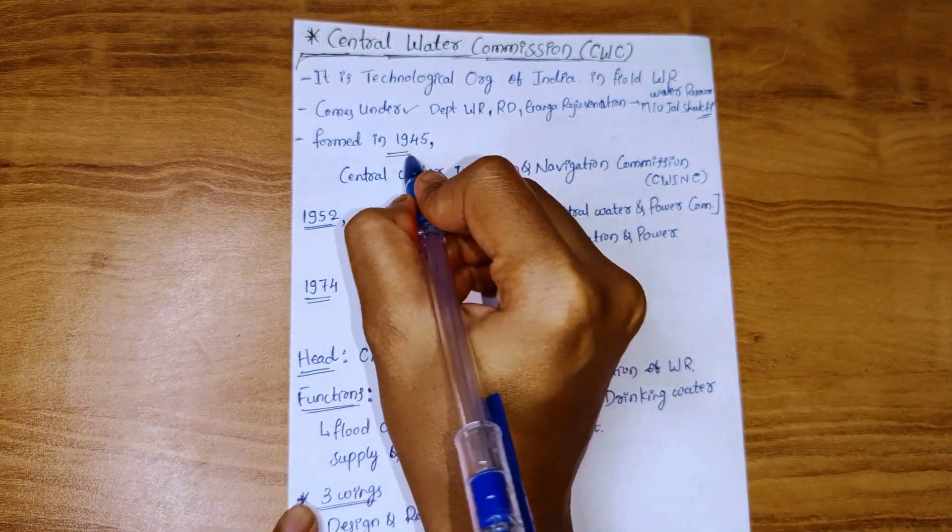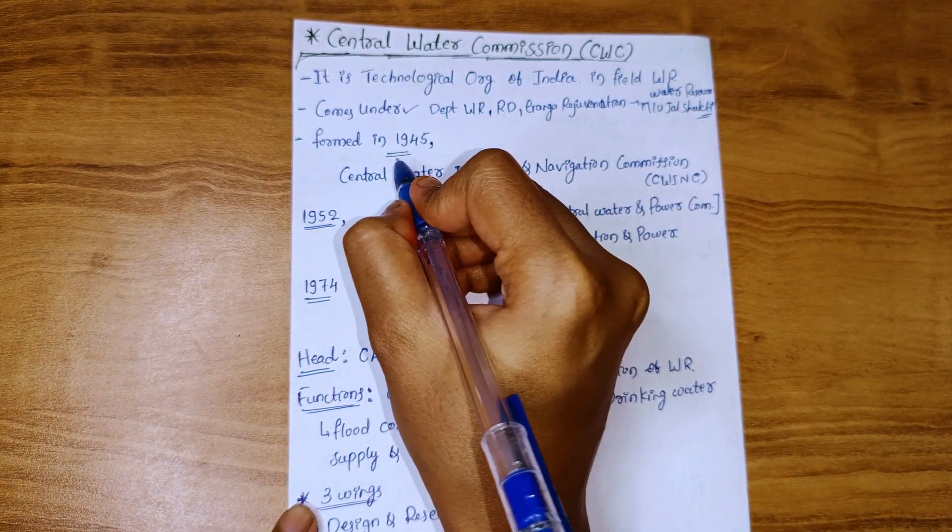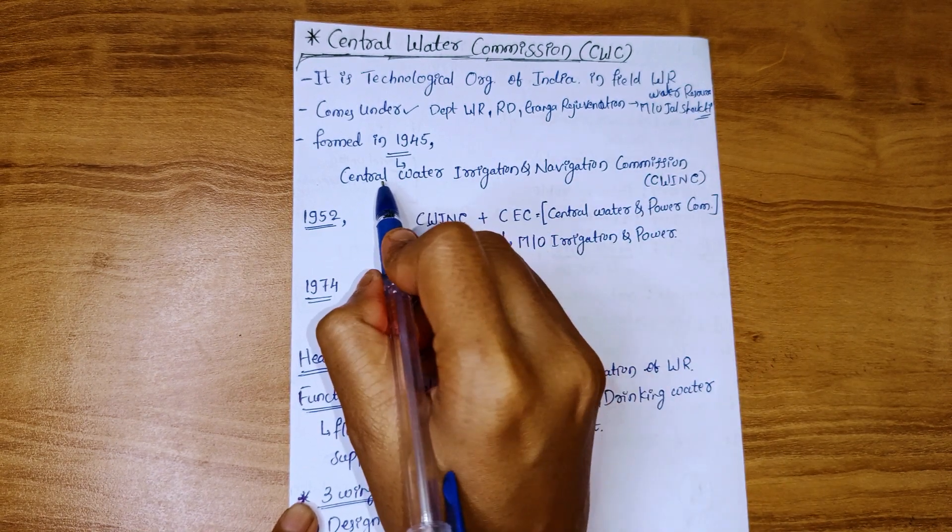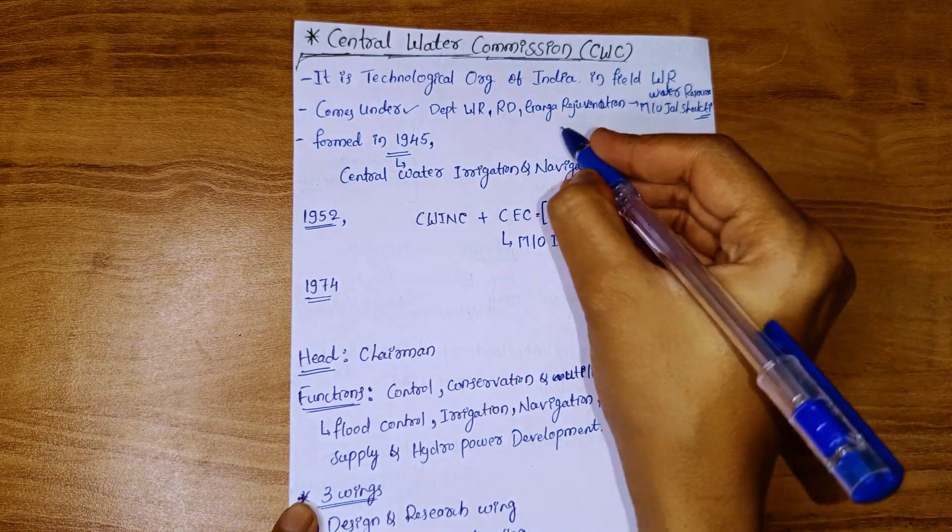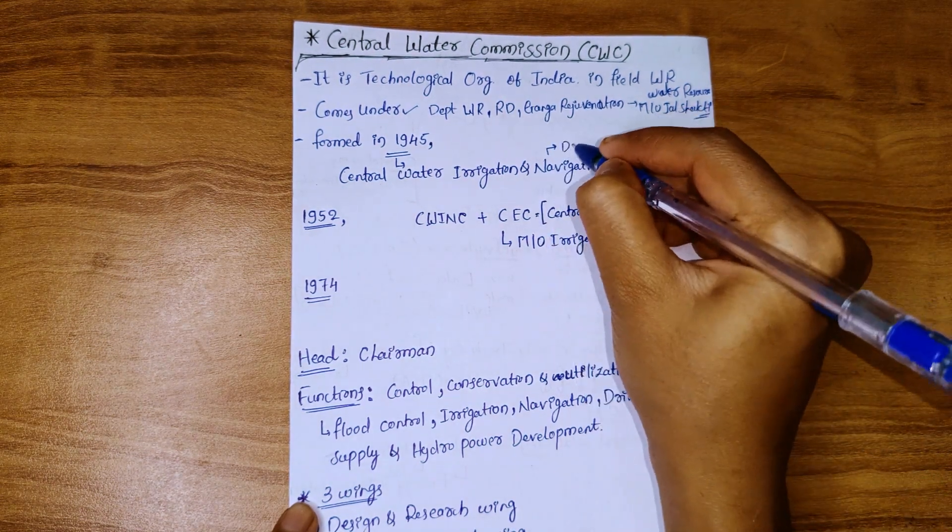CWC was formed in 1945. Initially, it was formed as Central Water Irrigation and Navigation Commission (CWINC), and Dr. B.R. Ambedkar advised to form this commission.